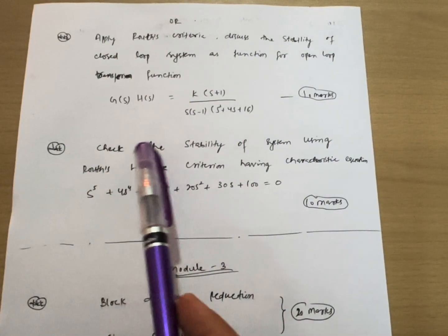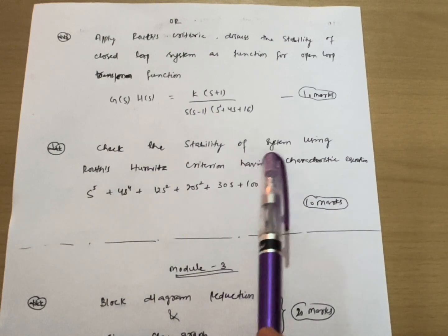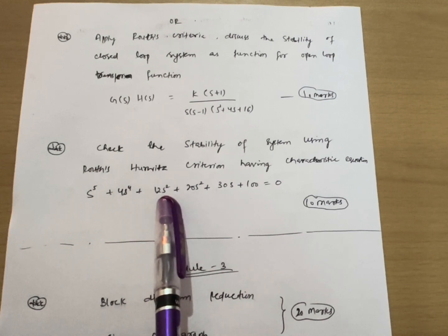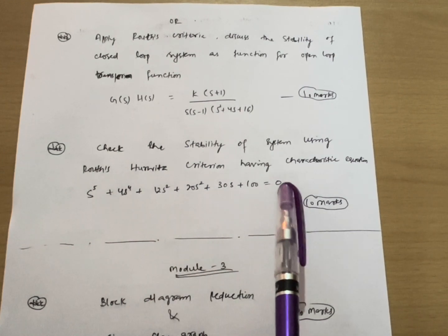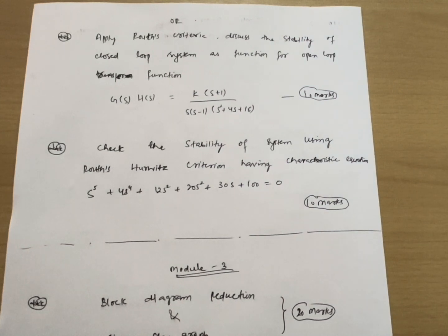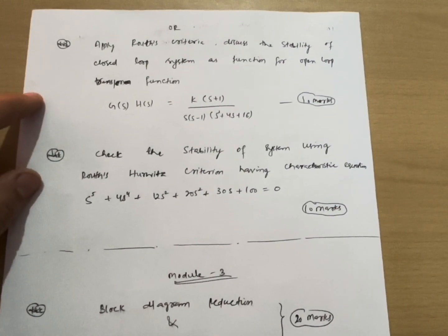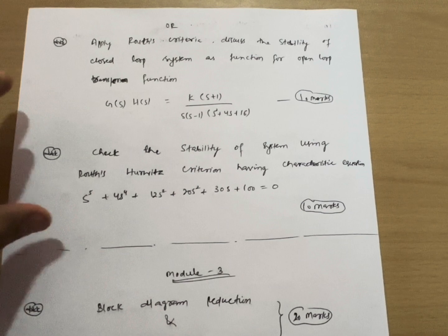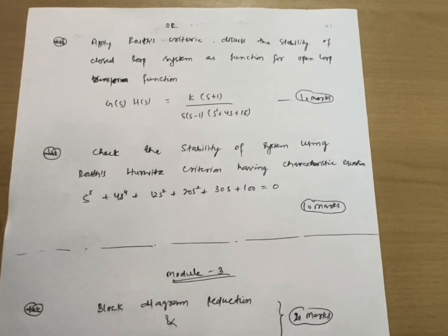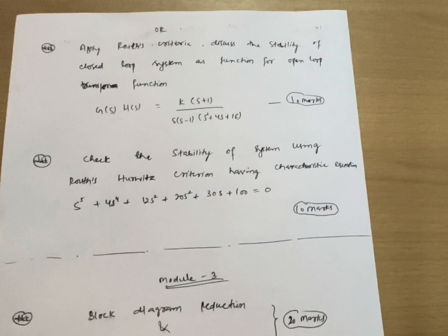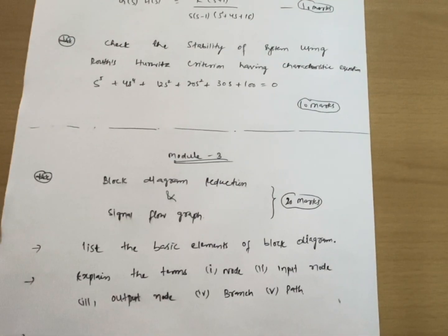Another question type: 'Check the stability of a system using Routh's criterion having characteristic equation s⁵ + 4s⁴ + 12s³ + 20s² + 30s + 100 = 0.' You should practice three to four problems from these two concepts. If you are comfortable with root locus, go through that; if you find Routh's criteria simpler, go through that. These two parts are both easier ones, so choose whichever you find more convenient.